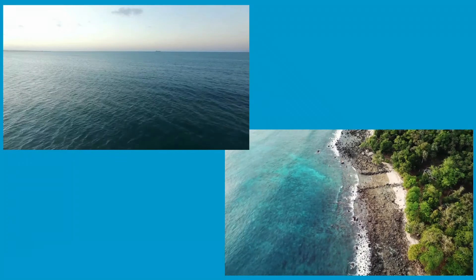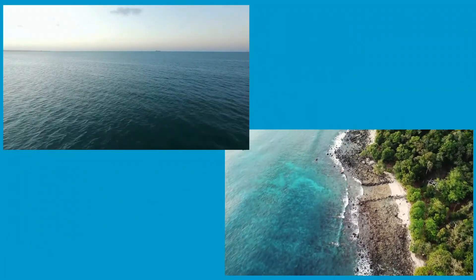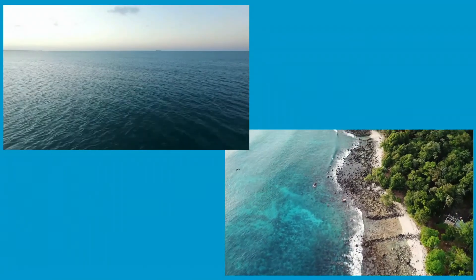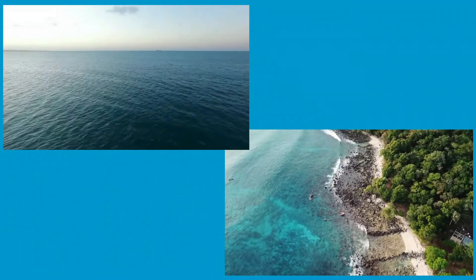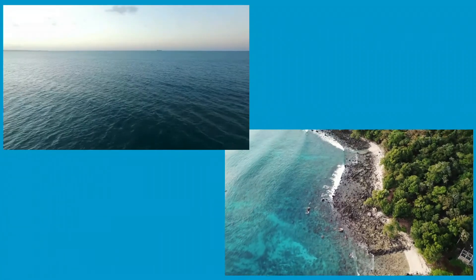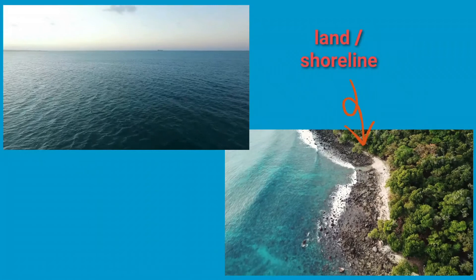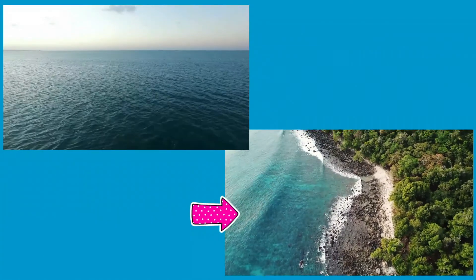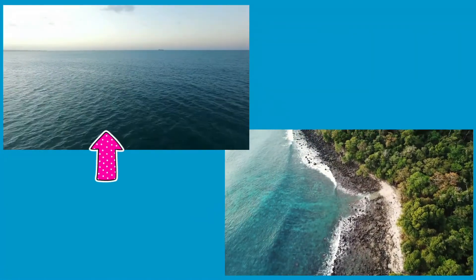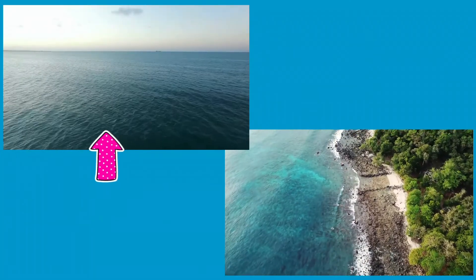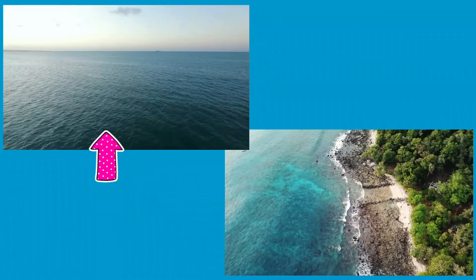Children, do you know the difference between ocean and sea? Sea is smaller than ocean and it is located closer to the land or shoreline. We call this sea and this is the ocean. Ocean covers a much larger area.